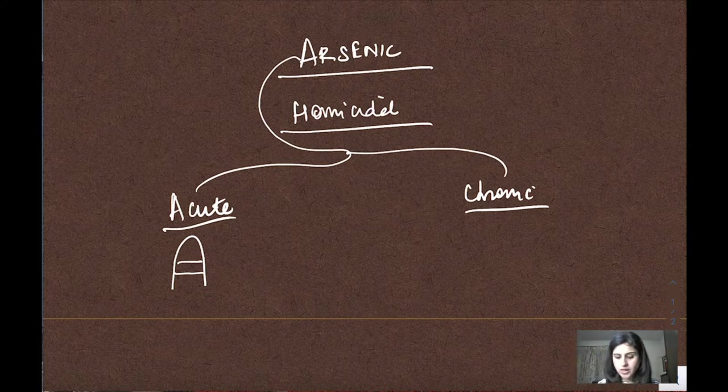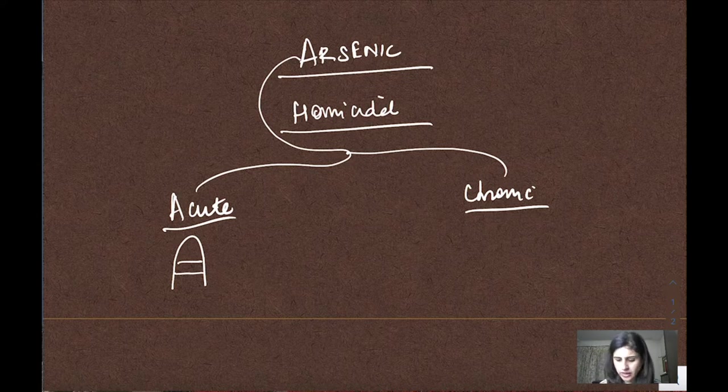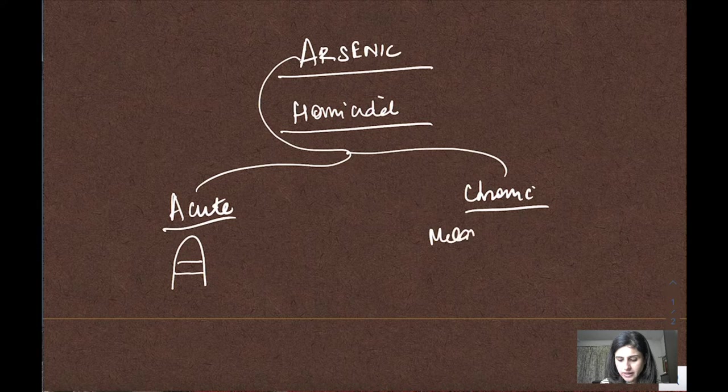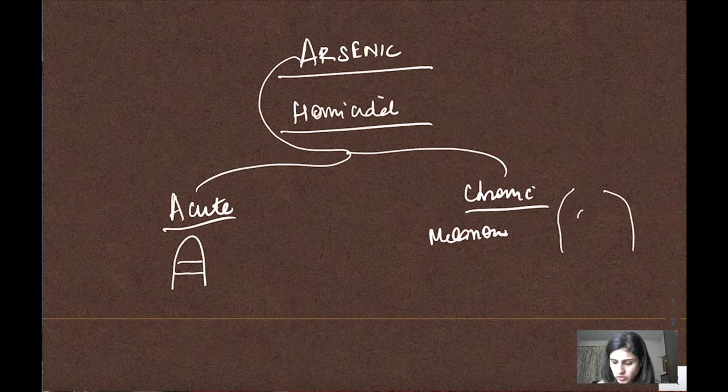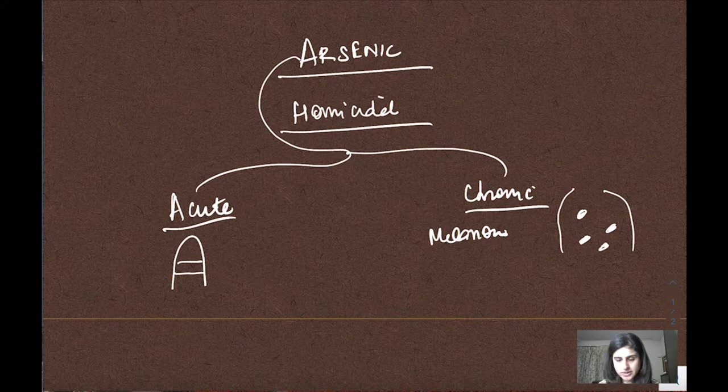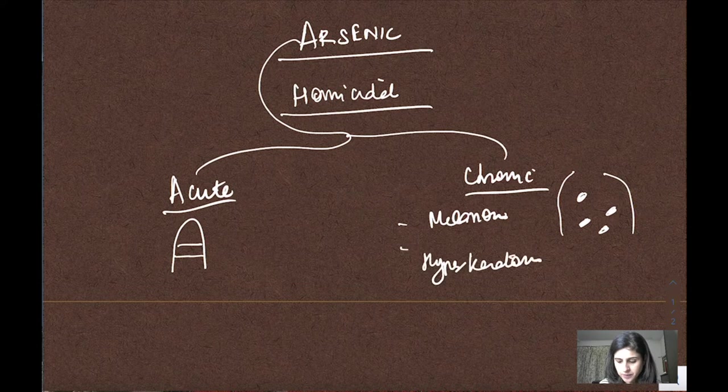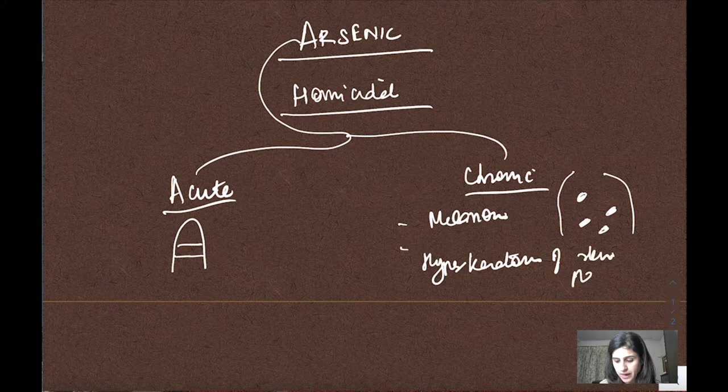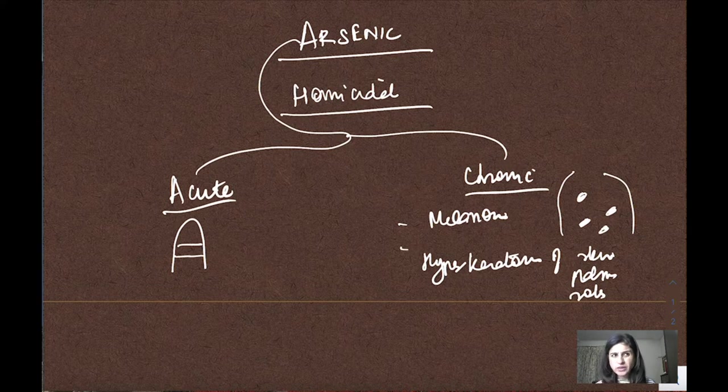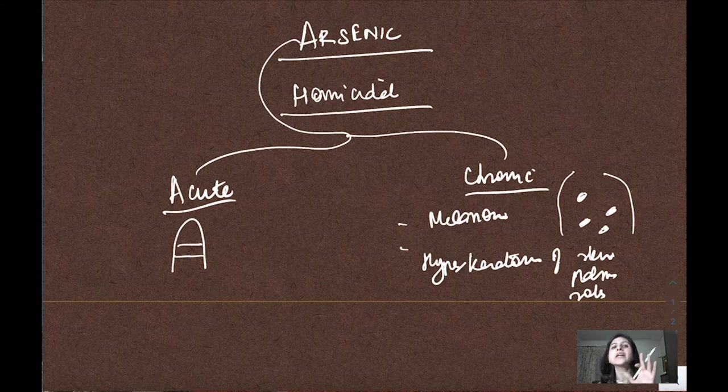In chronic arsenic poisoning, there are many presentations. There'll be pigmentation on the back - melanosis, dark patches because of increased melanin. Then there is hyperkeratosis of skin, especially palms and soles. The skin becomes really dry and peels off.